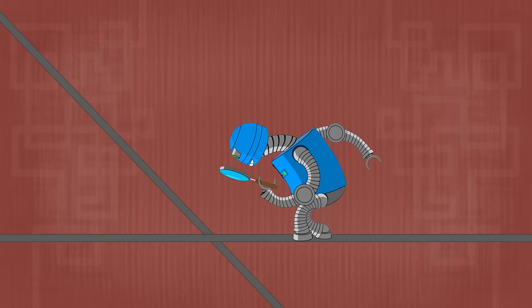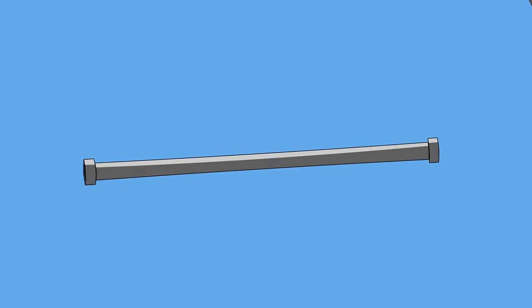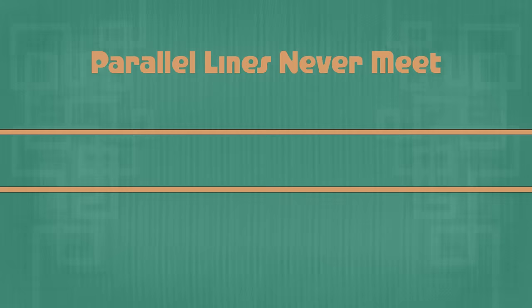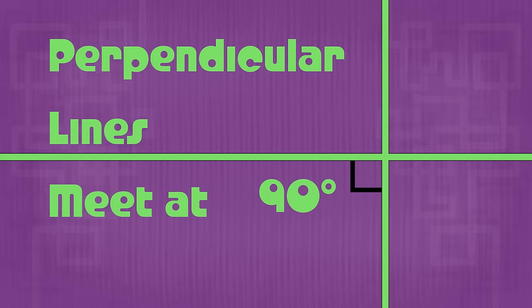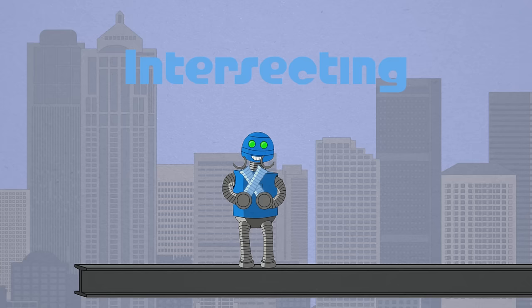Now let's talk about detecting if two lines are intersecting. It's the term that we select if at any point two lines connect. Parallel lines never meet. Intersecting lines make feast. Perpendicular lines meet at 90 degrees. Put your hands in the air with me. Parallel, Intersecting, Perpendicular — they're rectangular.